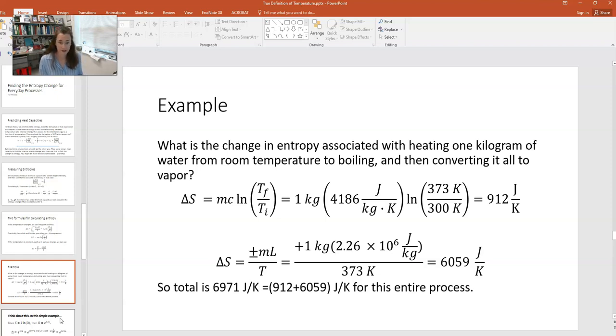Now once the water is heated to boiling, then you're going to take it through that phase change where it all boils away. So for that, you need to use the expression delta S equals ML over T. Now it's plus here because you're adding heat to the system to get this to happen. So it's plus one kilogram times the latent heat of vaporization for water, which you can look up, which is about 2.26 times 10 to the 6 joules per kilogram.